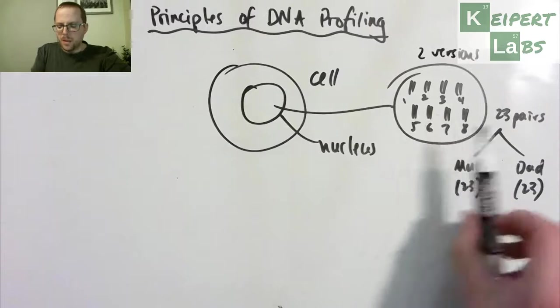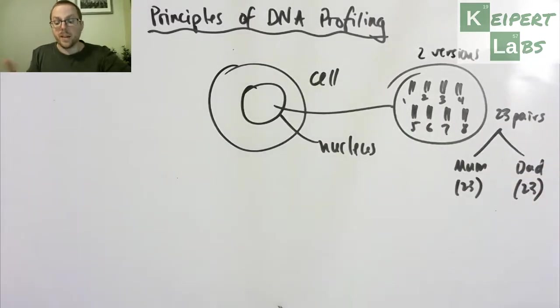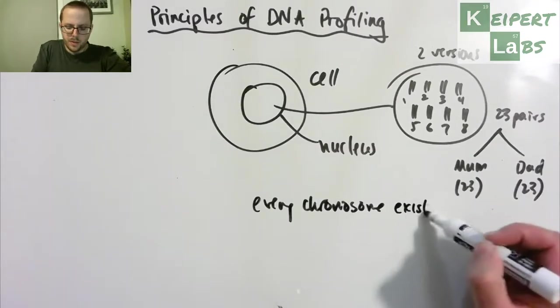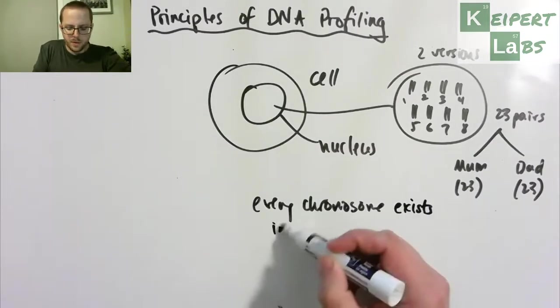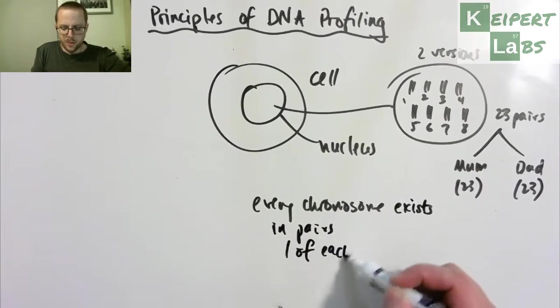So you've got 22 regular chromosomes, they're all autosomal chromosomes, and then one pair of sex chromosomes, X and Y. What we identify is that for every chromosome exists in pairs, one of each from each parent.